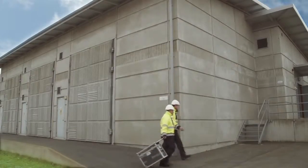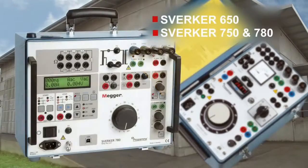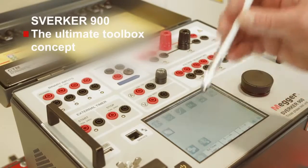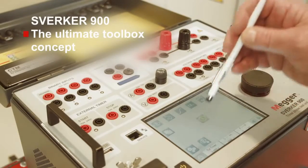Today, there are several models in the Sverker family: the 650, 750, 780 and 900, where the Sverker 900 is the three-phase model in this family of test sets.